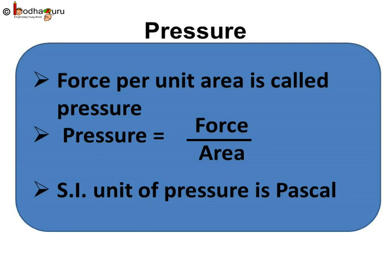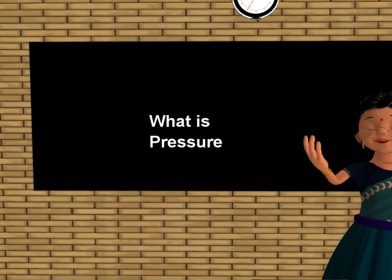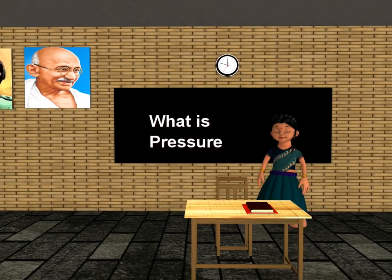So to sum up what we learned today: force per unit area is called pressure. The expression is Pressure equals force divided by area, and the SI unit of pressure is Pascal. That's all for now. Bye children!